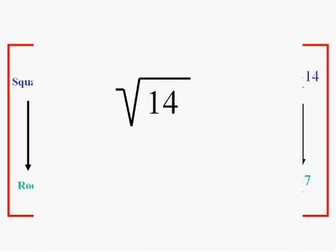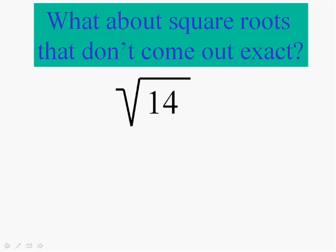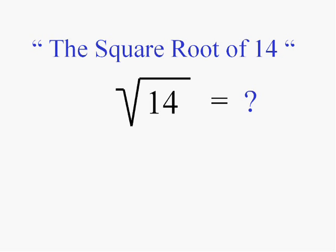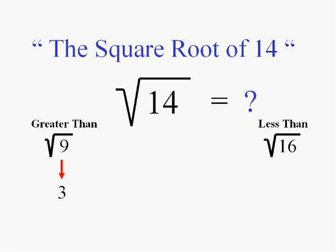Now, what about the ones that aren't perfect squares — that don't come out exact? There is a square root of 14. I know that it's bigger than the square root of 9, because the square root of 9 is 3. And I know the square root of 14 is smaller than the square root of 16, because 14 is smaller than 16, and the square root of 16 is 4. So this just doesn't come out exactly — it's some number between 3 and 4. I'll guess that it's about 3.74.